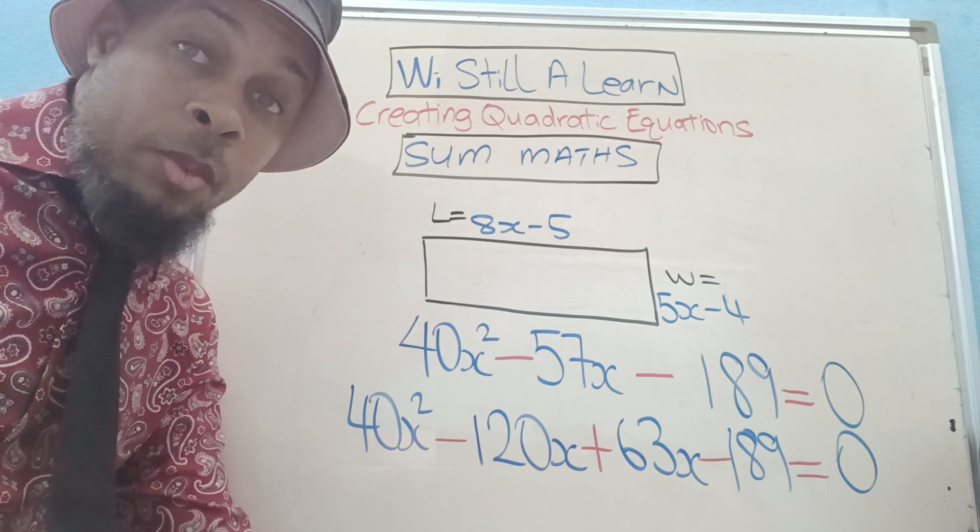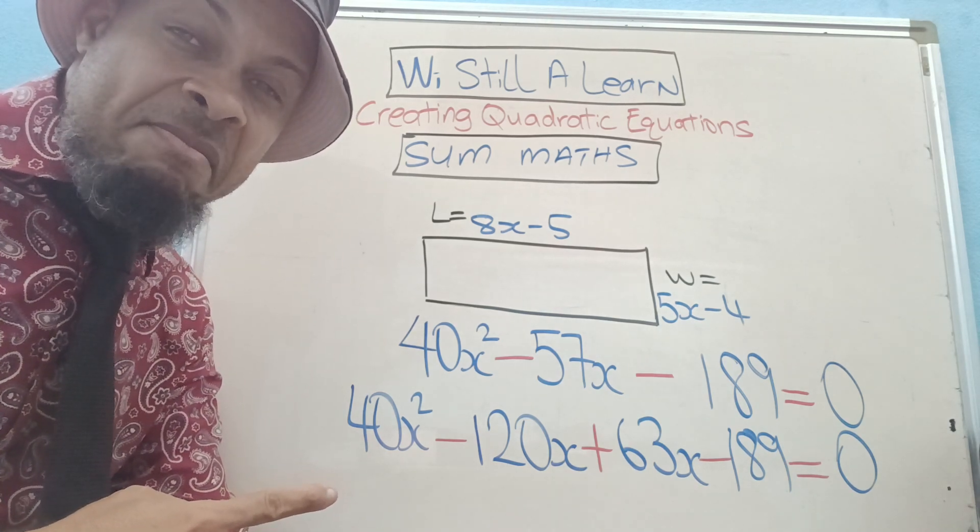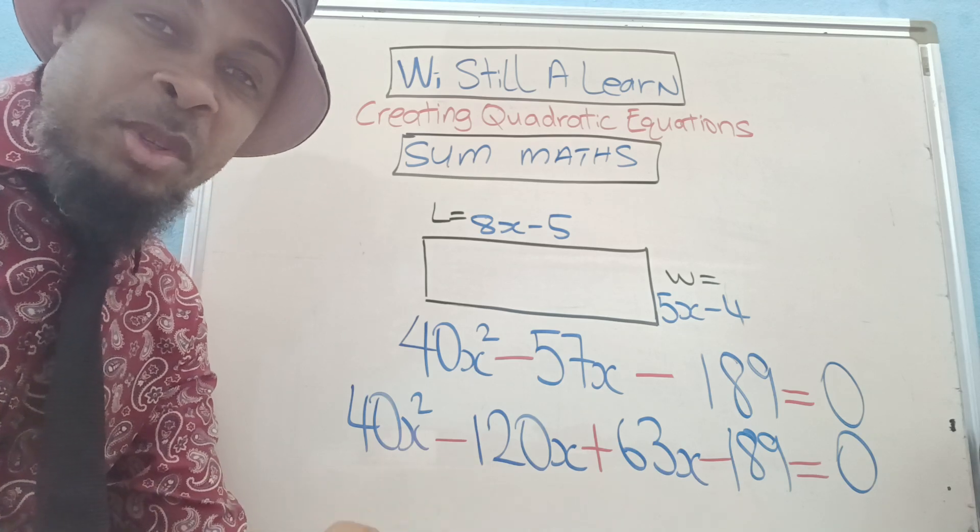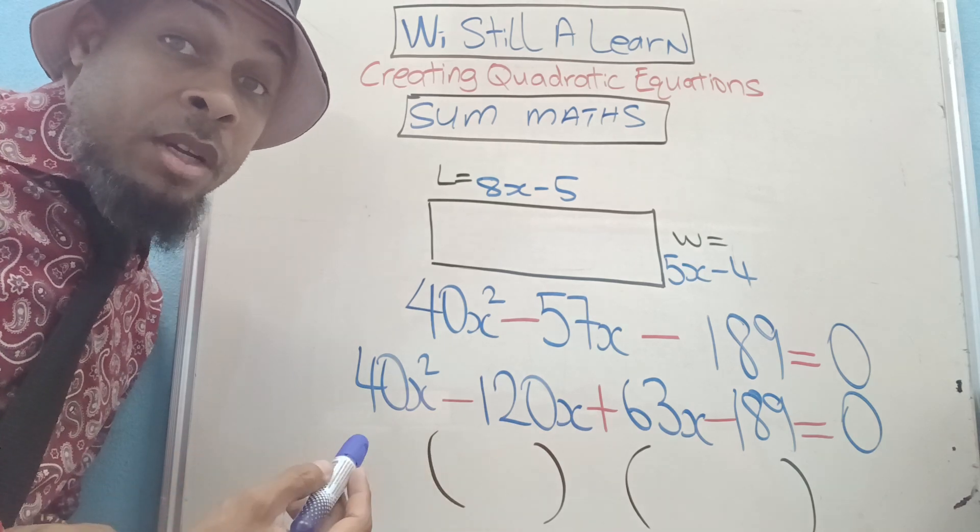So where were we? We're factorizing this. I'll put some brackets here. Let's see, the HCF of this and this was 40.